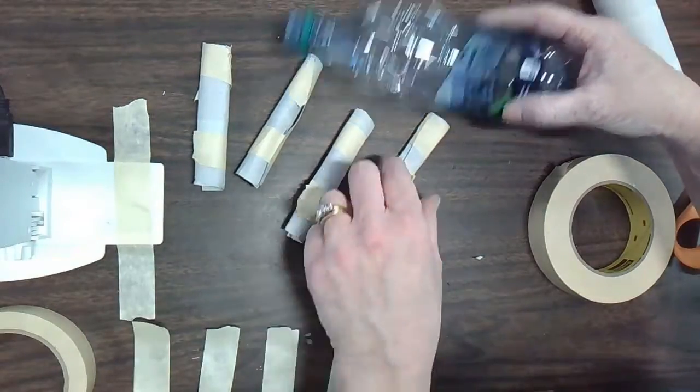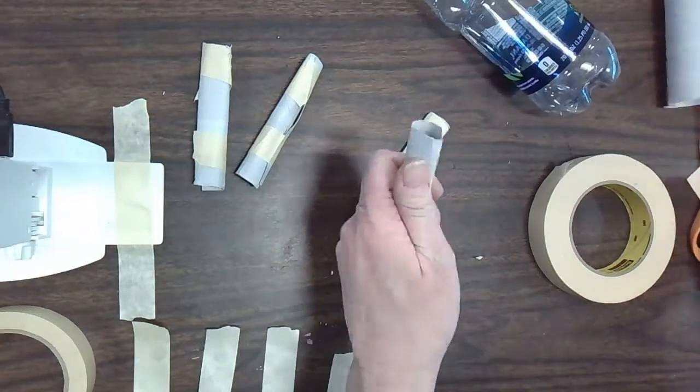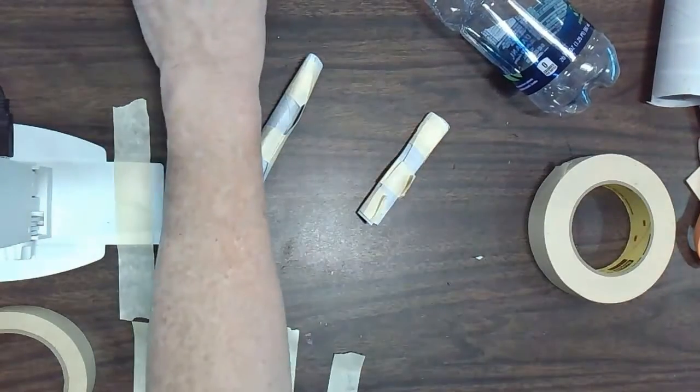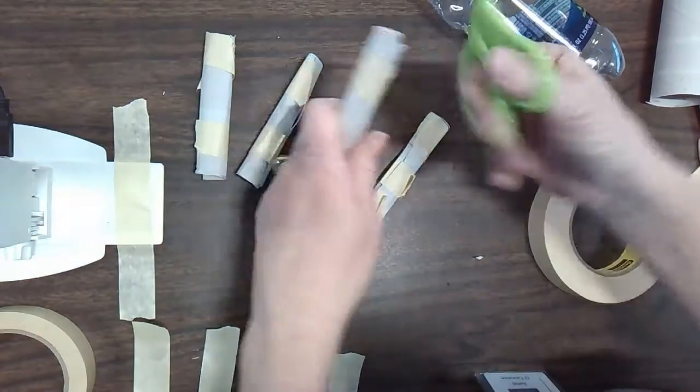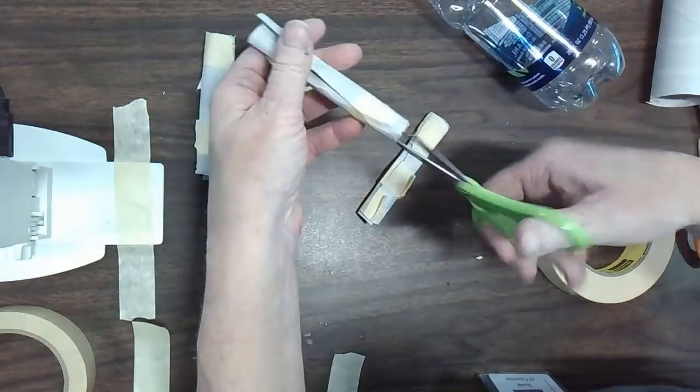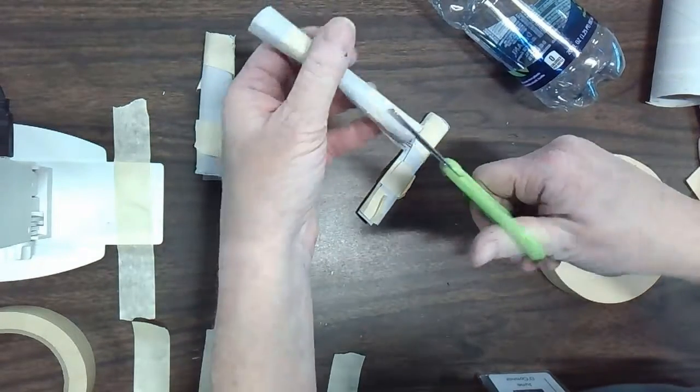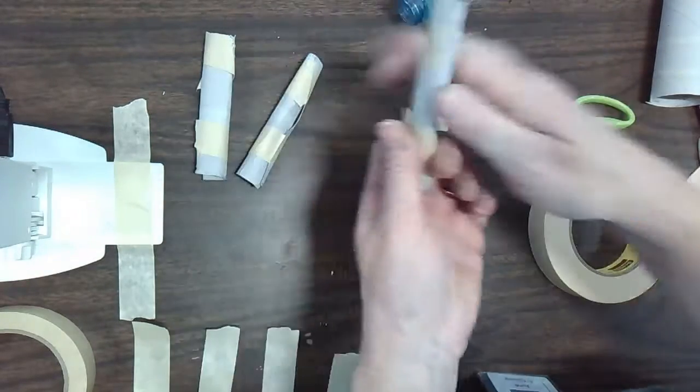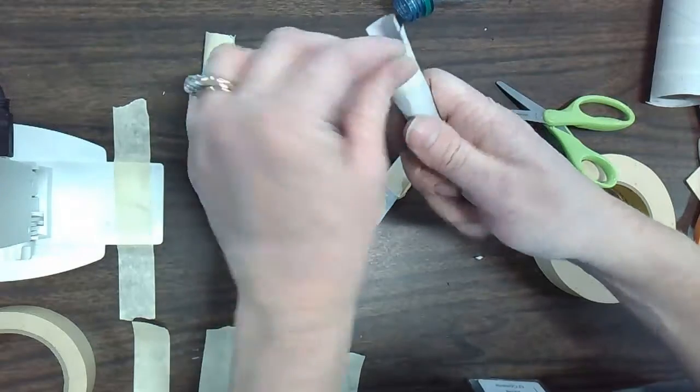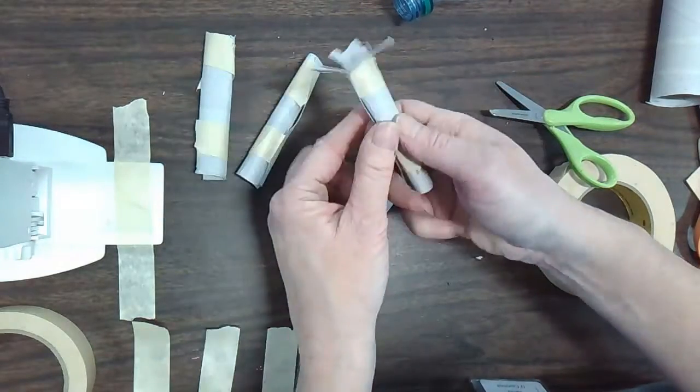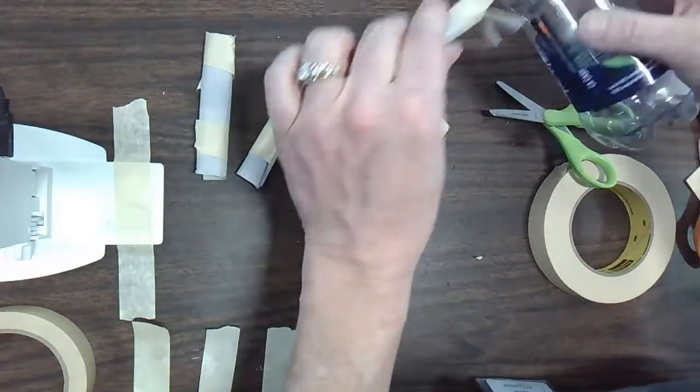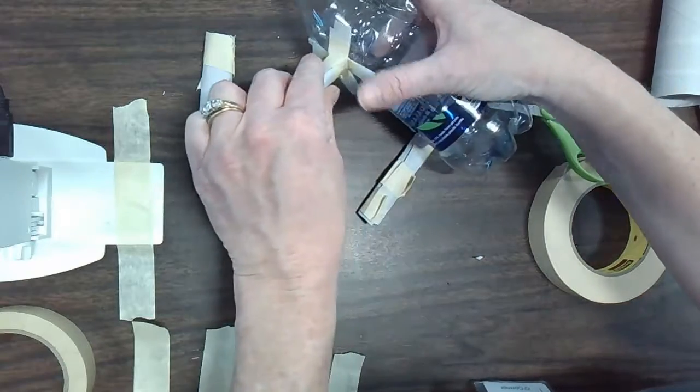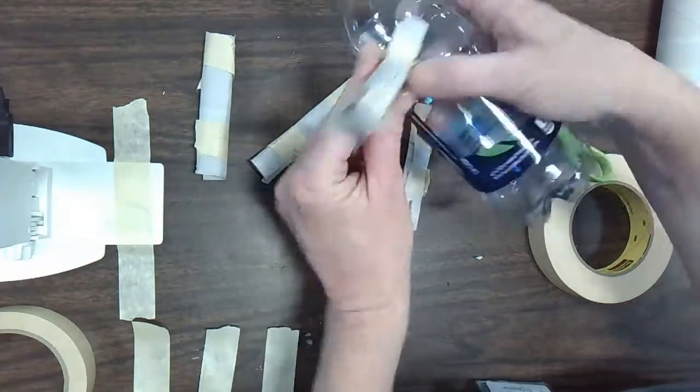Then you want to make four of those if it's a four-legged animal. The next step is to cut some little slits in the top so that you have an area to attach to the body of your animal. If you try and attach a flat end to the round edge it will not stay very well. So by cutting those slits and bending it out it's almost like a tree trunk. It will give you something better to add tape to.